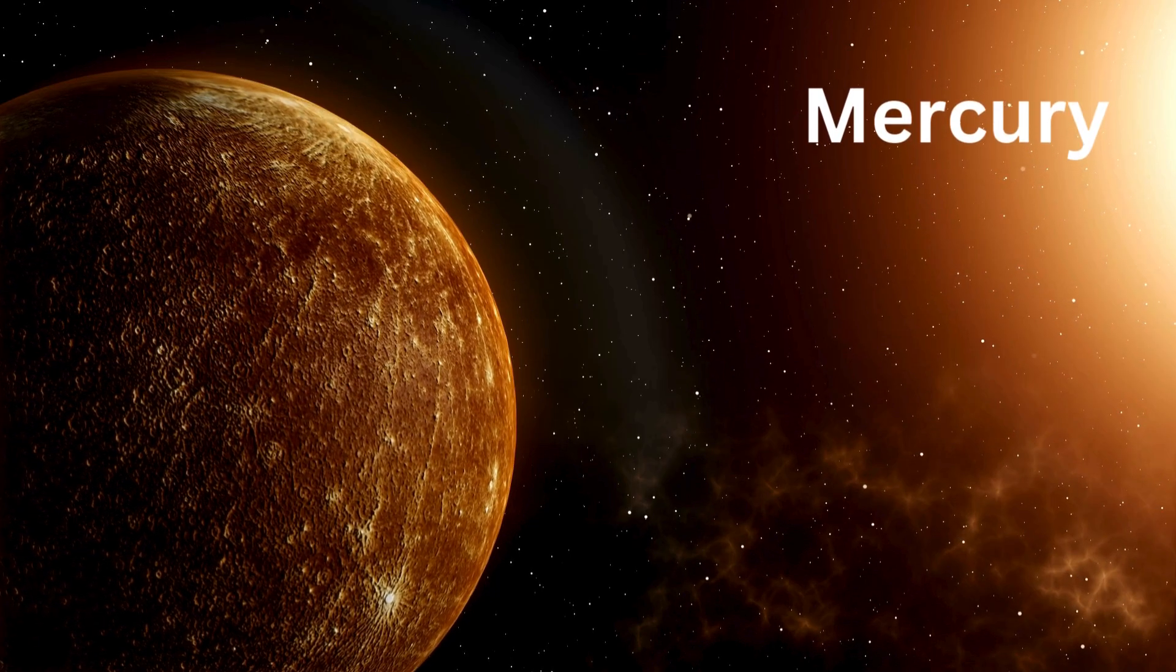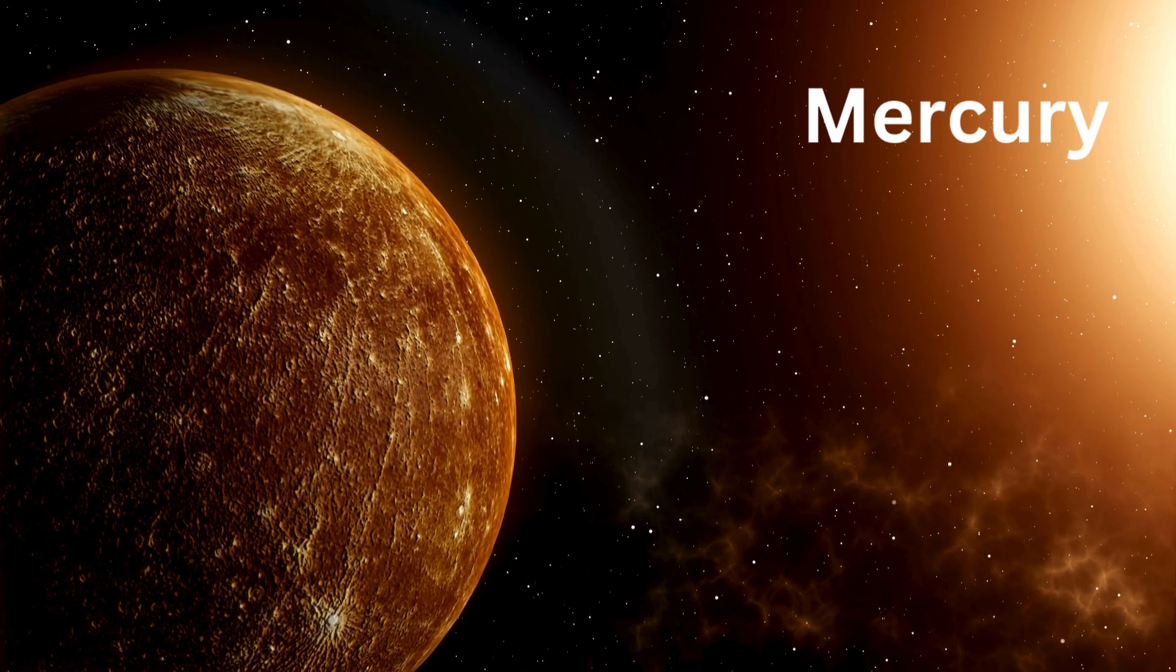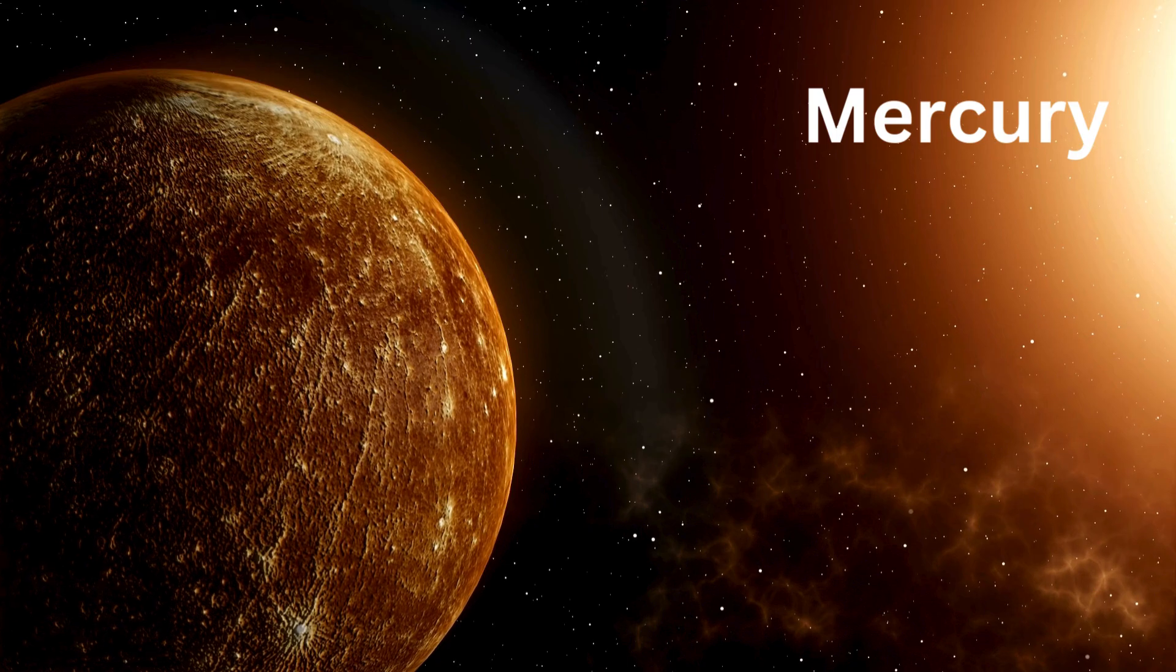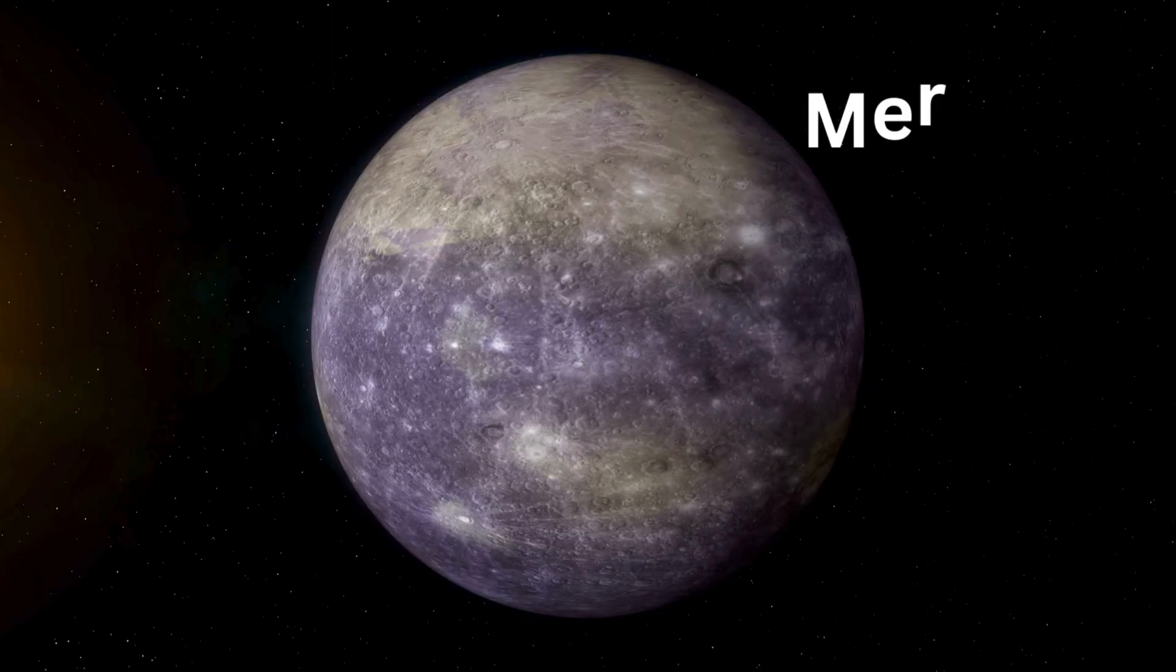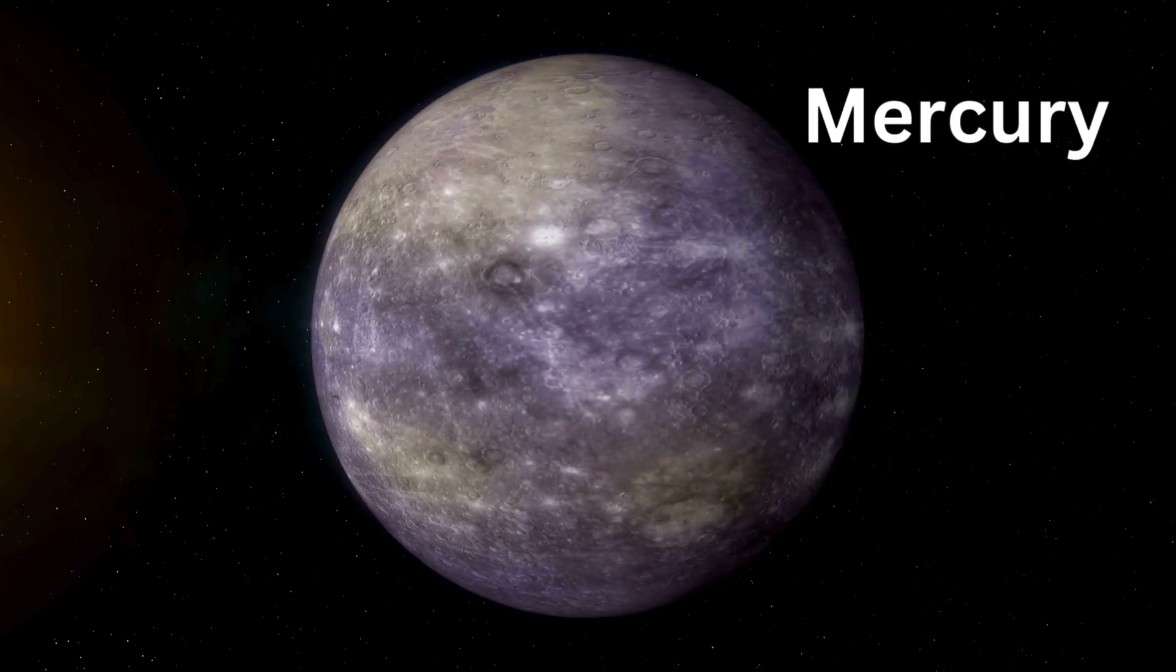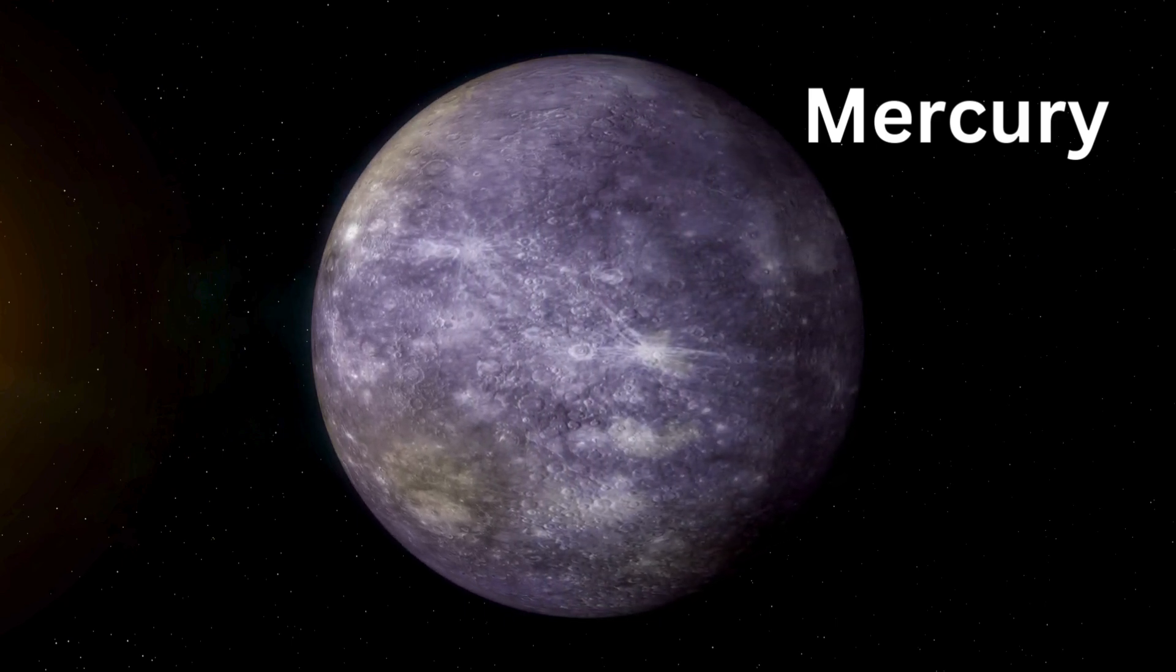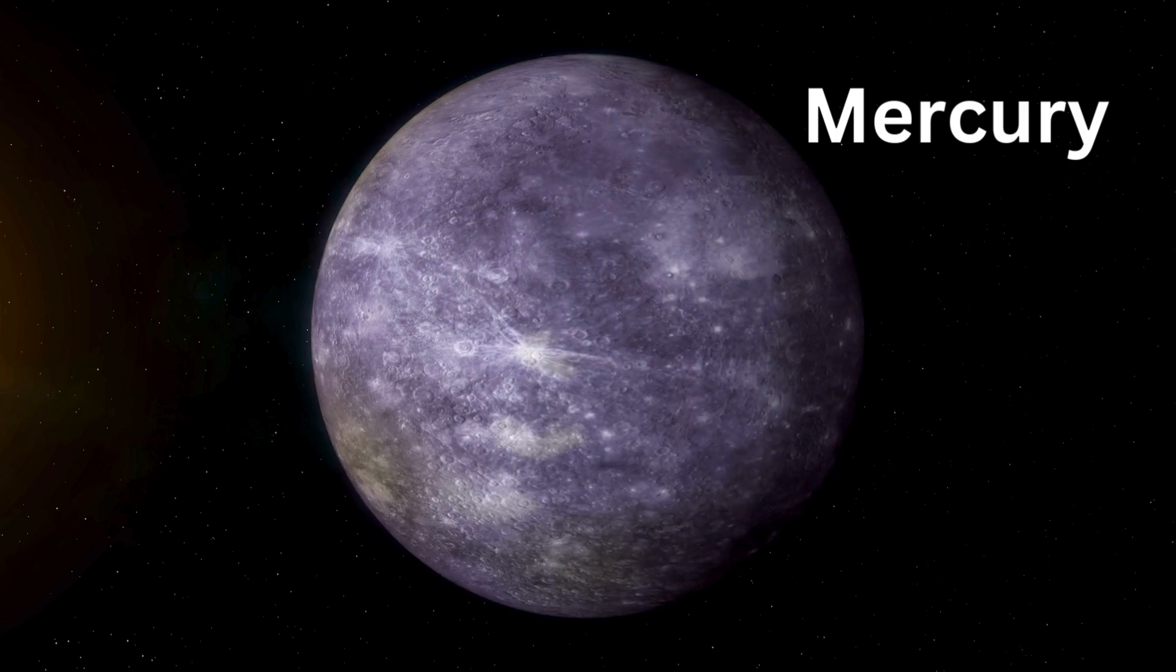Next, meet Mercury, the closest planet to the sun. It's crazy hot during the day, like 800 degrees Fahrenheit. But at night, it's freezing cold, down to minus 330 degrees Fahrenheit. Talk about extreme temperatures.